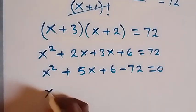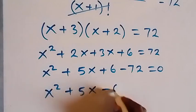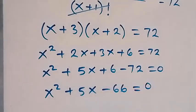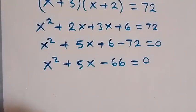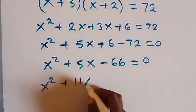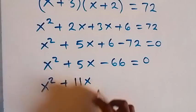This becomes x squared plus 5x minus 66 equals zero. The factors of 66 that will give us plus 5 are plus 11 and minus 6. So we have x squared plus 11x minus 6x